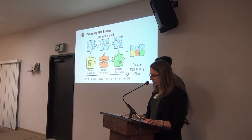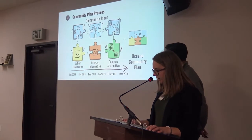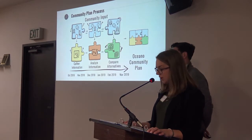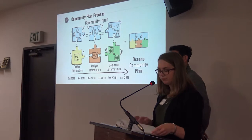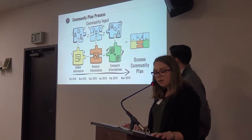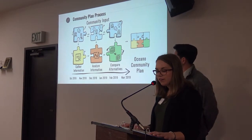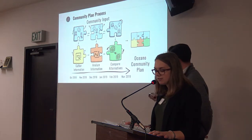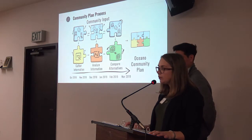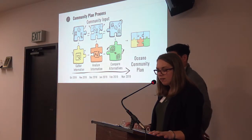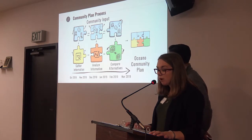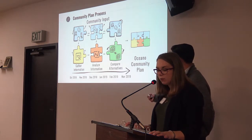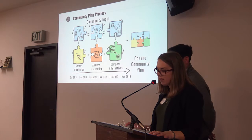During the second phase, we analyzed community feedback to understand where Oceano wants to be as a community. Today, we are in the comparing alternatives phase. In this third phase, we have been developing and comparing growth alternatives to answer the question: how do we get there? This is our third public meeting. Our final meeting will take place on March 12 of this year where we will present the draft community plan.